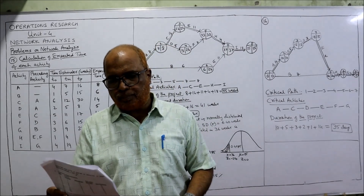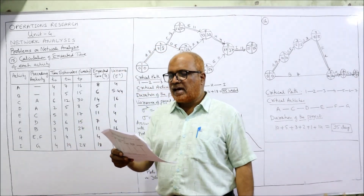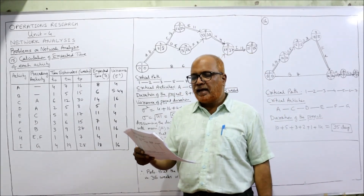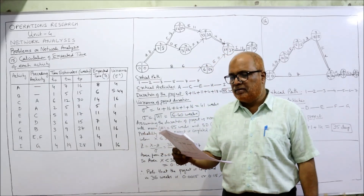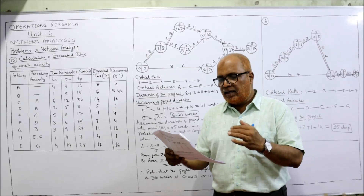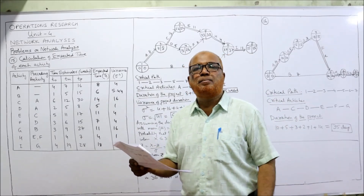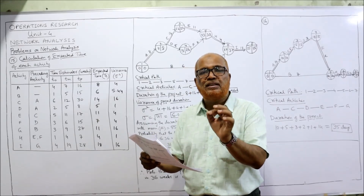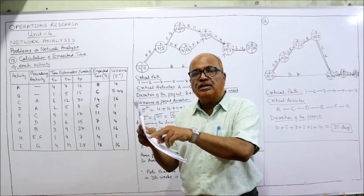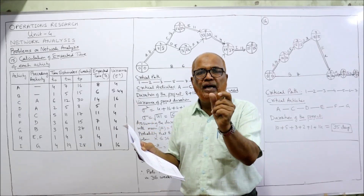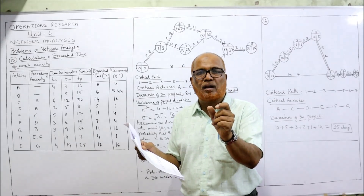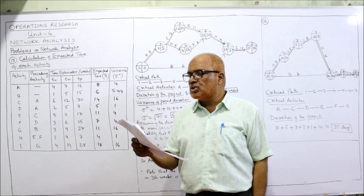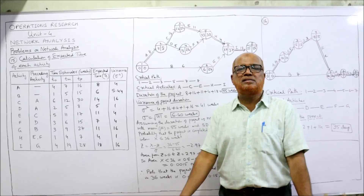Now see the 15th problem. A project has the following activities and characteristics: activities A, B, C, D up to I. There is no preceding activity for A and B. Then we have A, A, C, D, B, H as predecessors for the other activities. There is a misprint for activity I — the predecessor was only G written in your question paper. Along with G, write down H, so G and H is the predecessor for activity I.